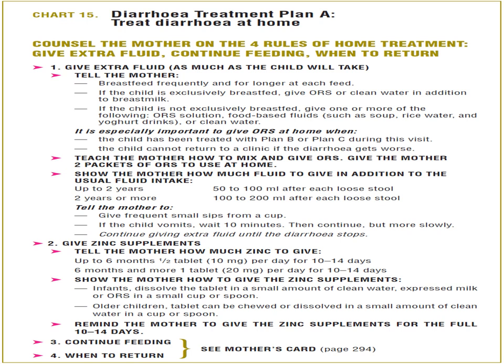Treatment Plan A is for no dehydration. Four basic points: (1) Give extra fluid — tell the mother to give ORS as much as possible to replace ongoing losses and prevent dehydration. Teach the mother how to make ORS correctly, as many mothers come from rural areas. (2) Give zinc supplements for complete 10 to 14 days. (3) Continue feeding — some families stop feeding during diarrhea, but the child needs extra calories. (4) Explain the signs of severe dehydration and tell them to return if symptoms continue.